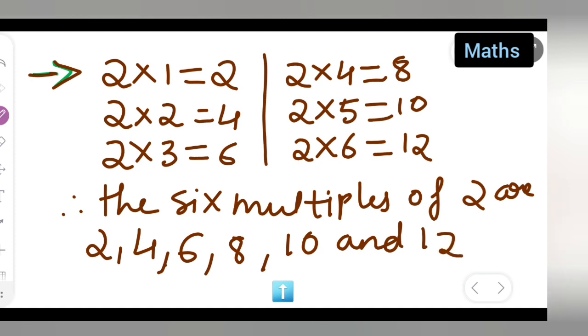So these are the 6 multiples of 2: 2, 4, 6, 8, 10, and 12.